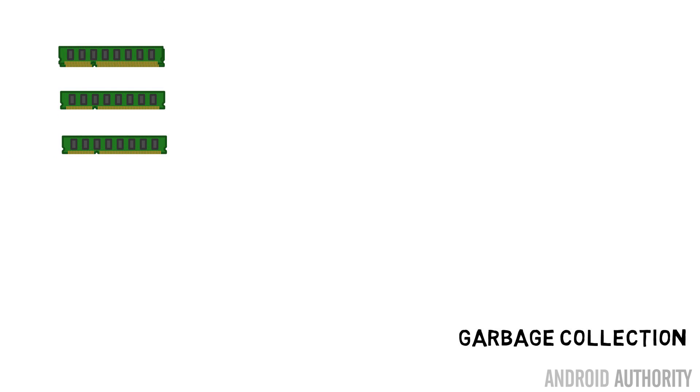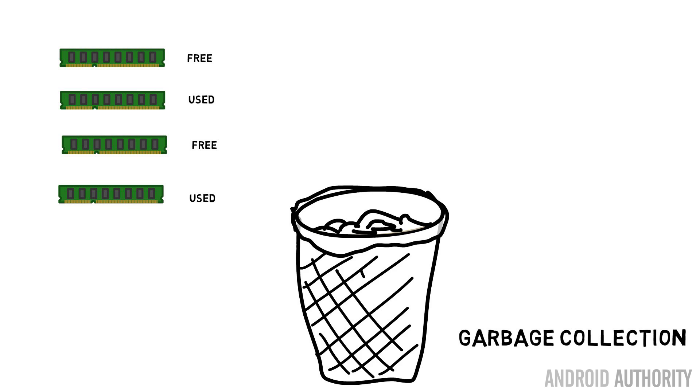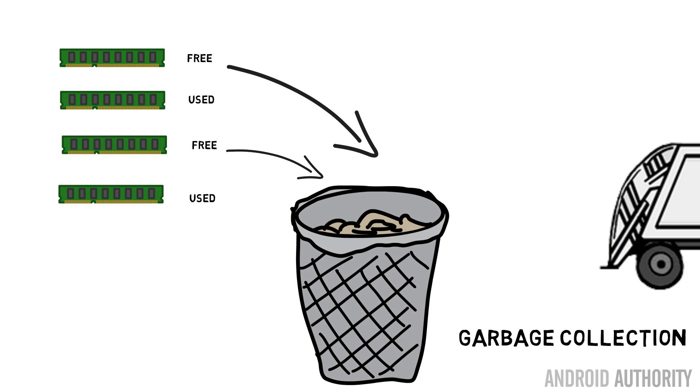The other big difference is that Java uses automated memory management. When a programmer allocates an object, they don't need to worry about when it's no longer needed. A garbage collector runs periodically and collects all the bits of memory that are no longer needed. However, the garbage collector is expensive to run. For example, if you're writing a game and need to update frames every 16 milliseconds, having the garbage collector run at that moment will affect performance.